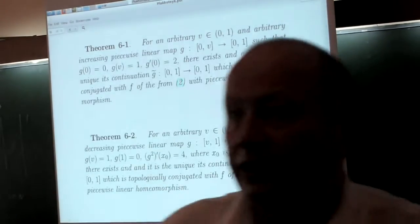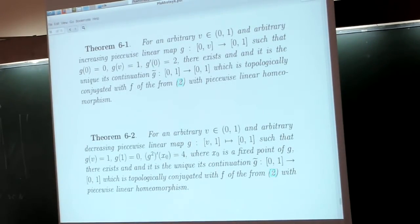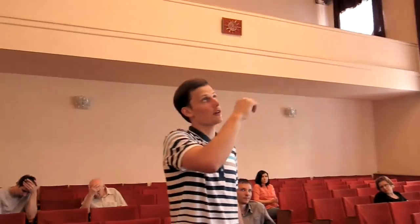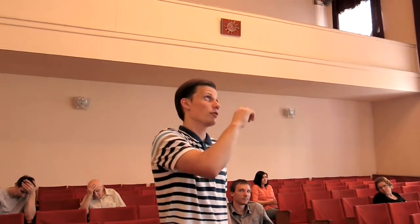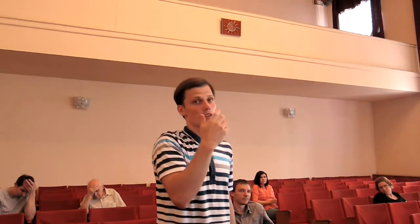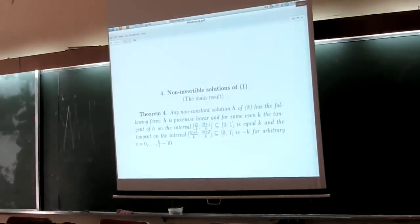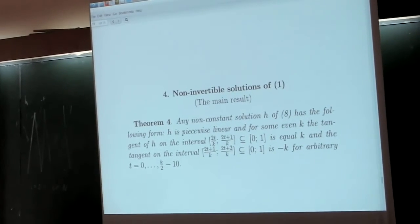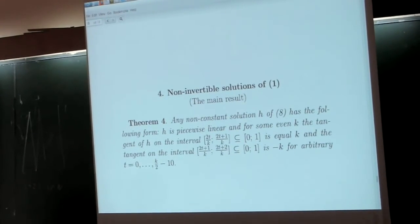Short question, short answer please. In your main result, the last number is K divided by 2 minus 1. What is that? K over 2 minus 1, yes. Let us thank the speaker again. Thank you.